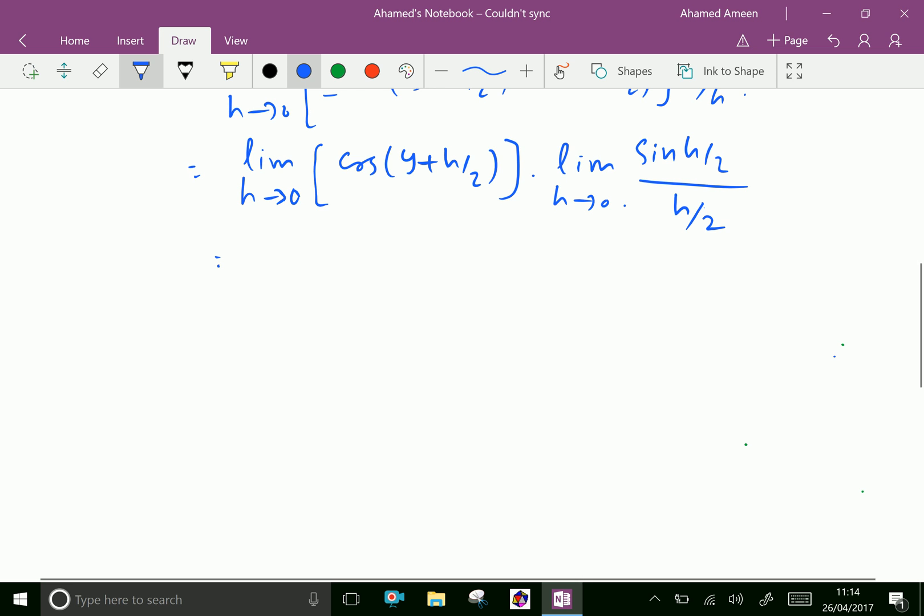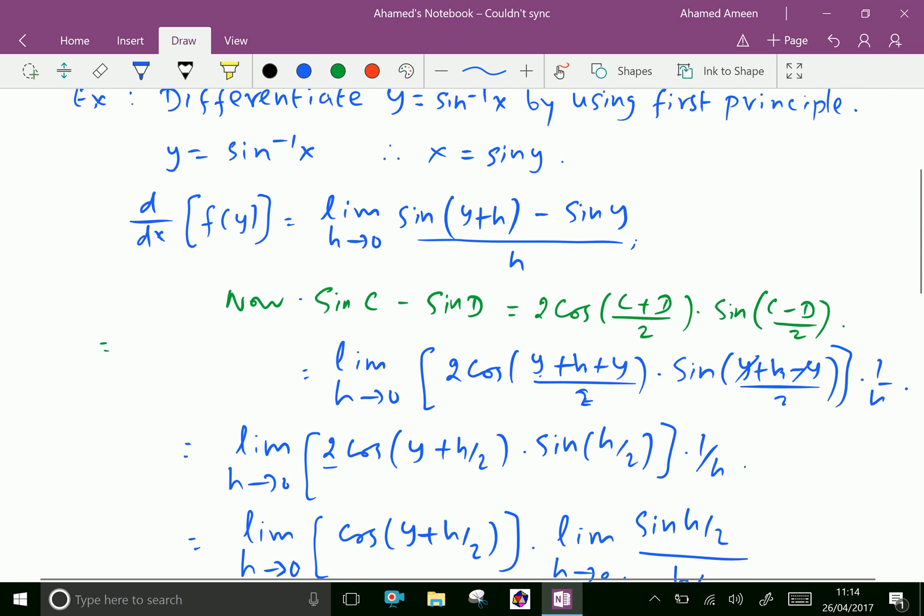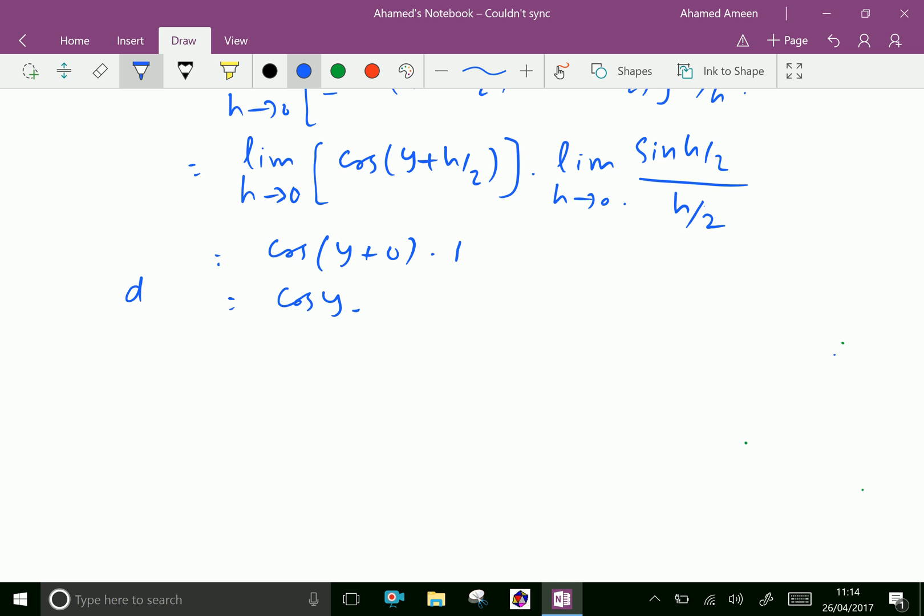Applying the limits, cos of y plus 0 because h tends to 0, then h over 2 also tends to 0. Next, limit sine h over 2 over h over 2 when h tends to 0 is 1. Then this is cos y, so dx by dy equals cos y.